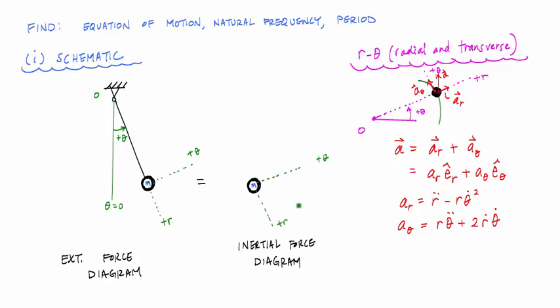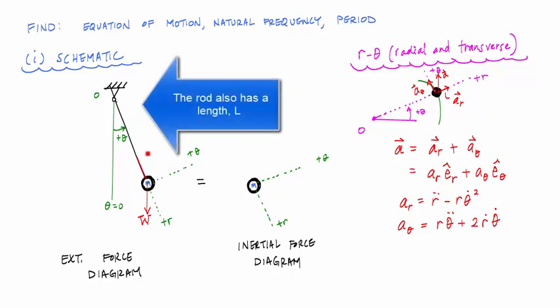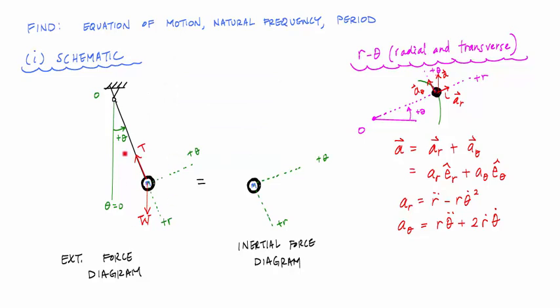Now the external forces that are acting on this, this particle has a mass m. So here I'm going to say boom, this has a weight, which is a force and technically a vector. And this thing also has a tension force in the rod. So if I were to cut it and draw a free body diagram of this rod, I would see that this cable or this rod has a tension force on it and it's acting on the mass. And these are my external forces.